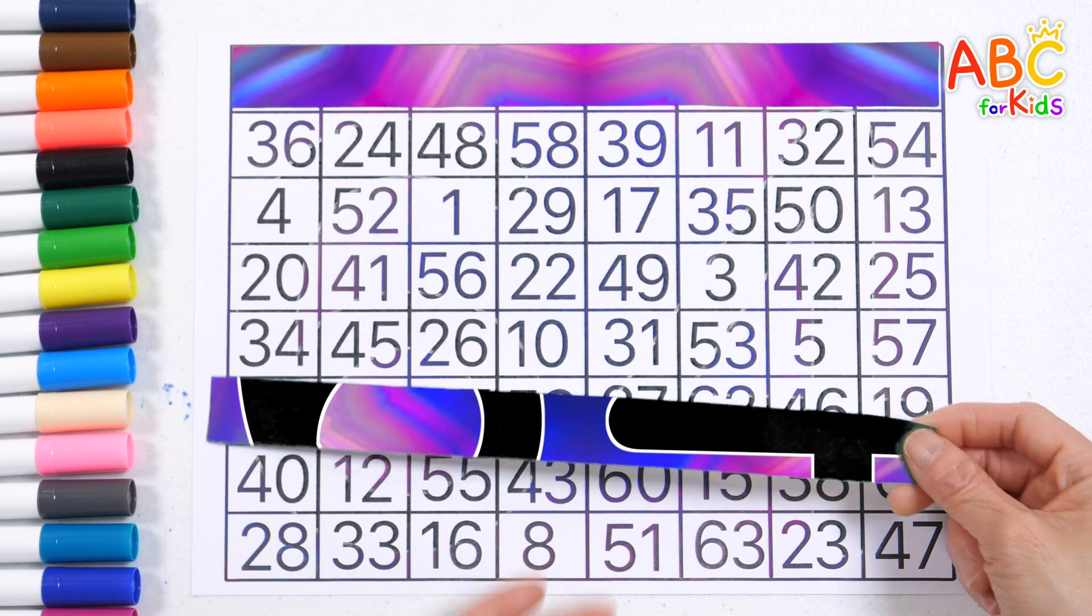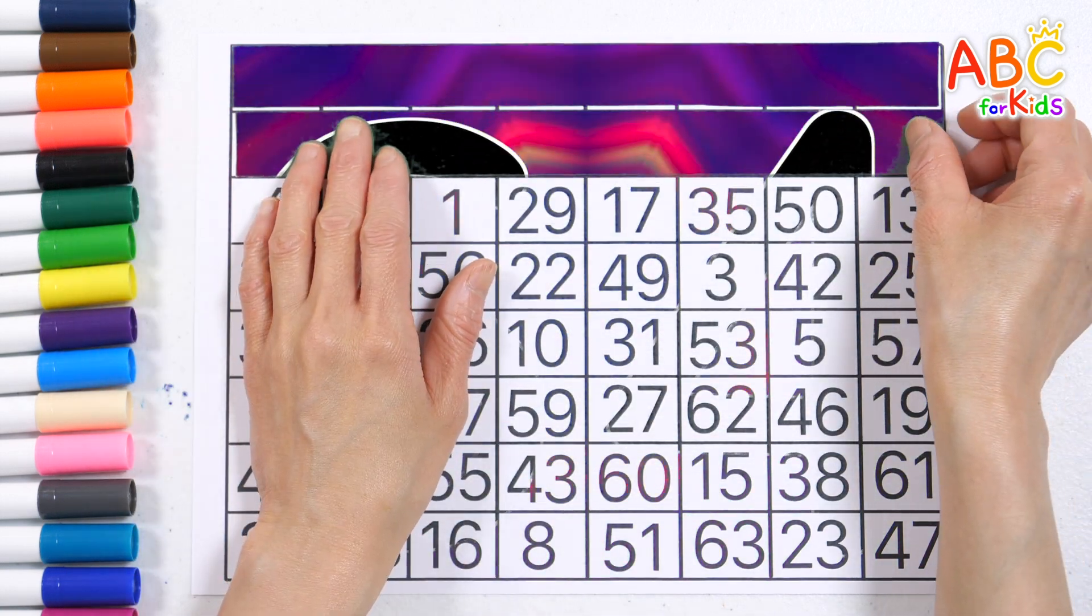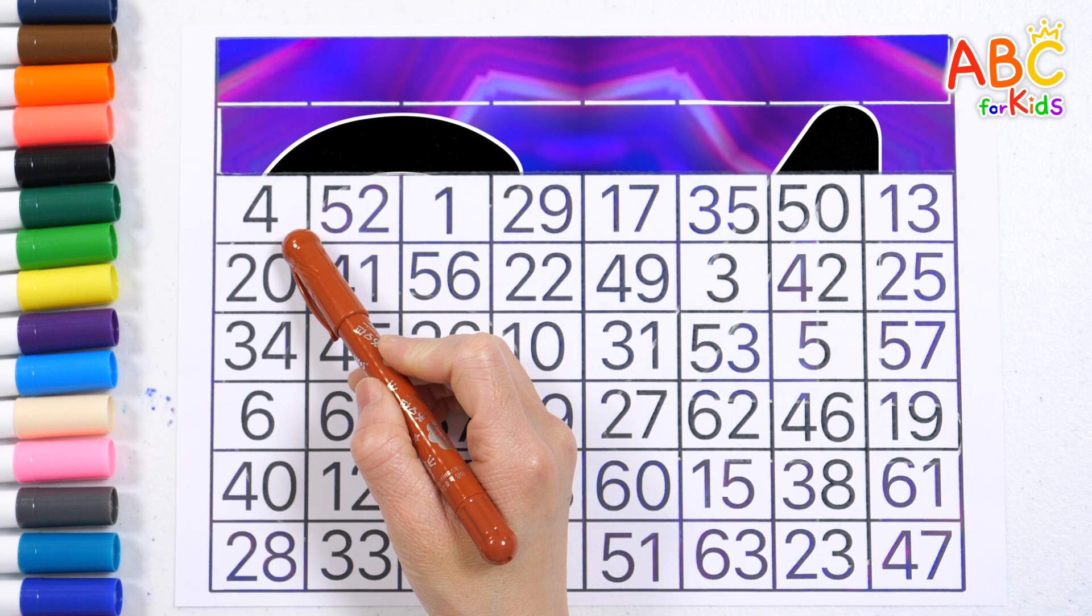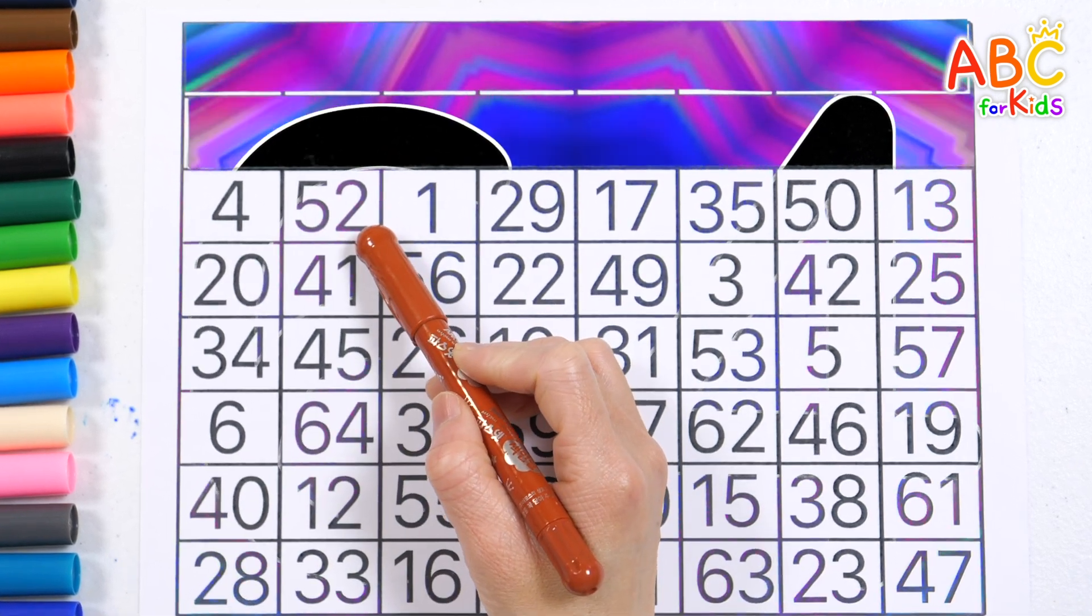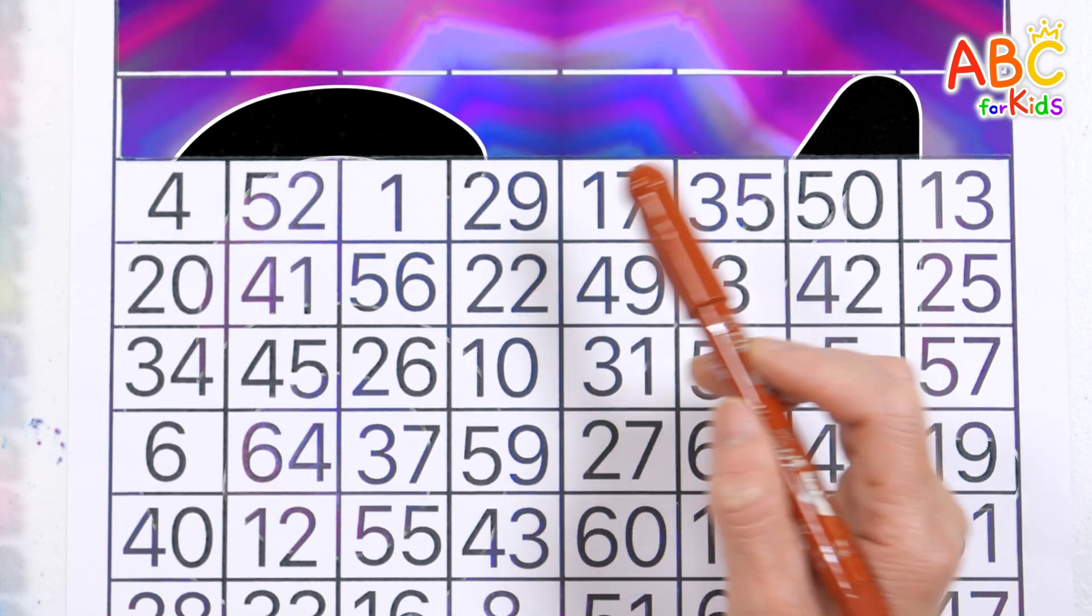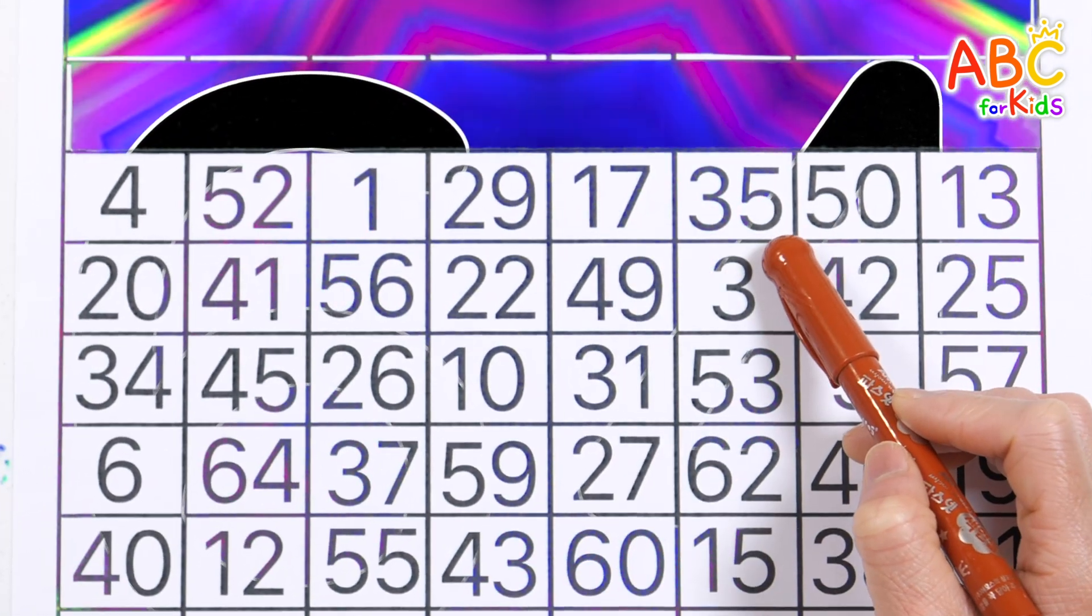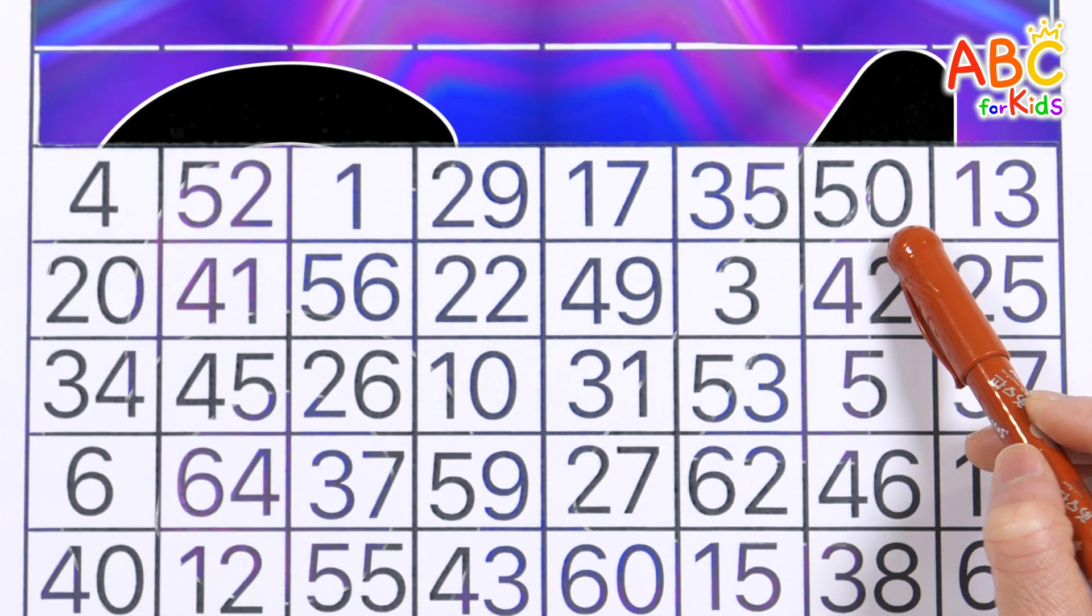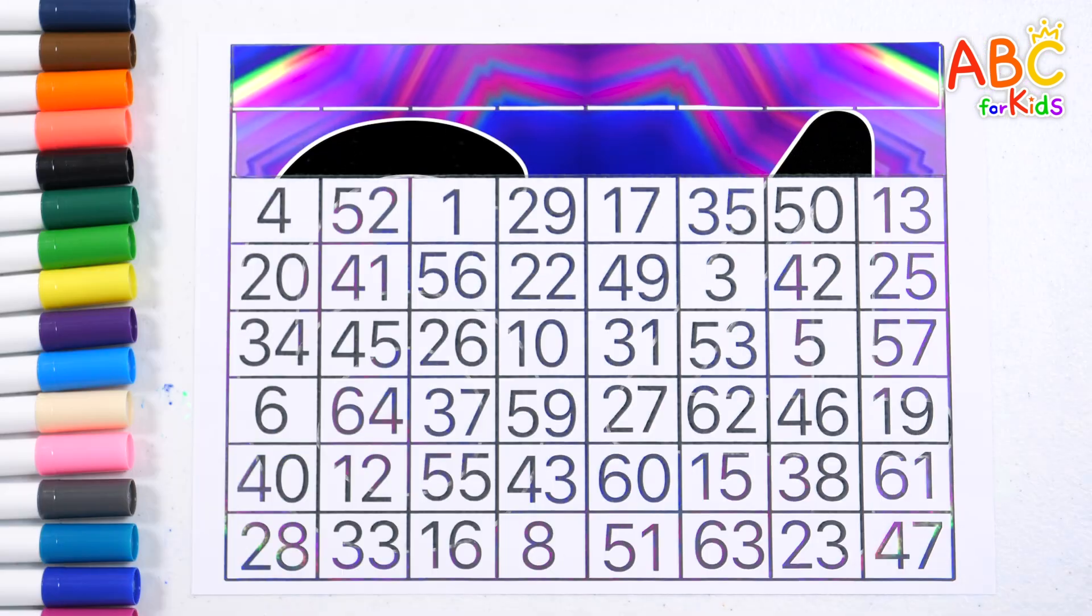What numbers are hidden? 4, 52, 1, 29, 17, 35, 50, 13. Great job!